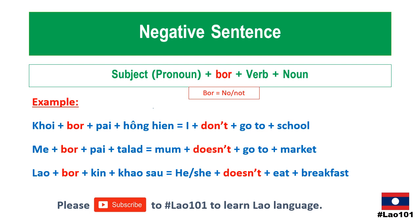Coming to the negative sentence — with a negative sentence you just add the word 'bo', which means no or not. The structure is: pronoun, then the word 'bo' in the middle before the verb, and then the noun. For example, 'khoi bo bai hong hian' — 'bo' means don't. Again, we don't split differently for first person and third person.